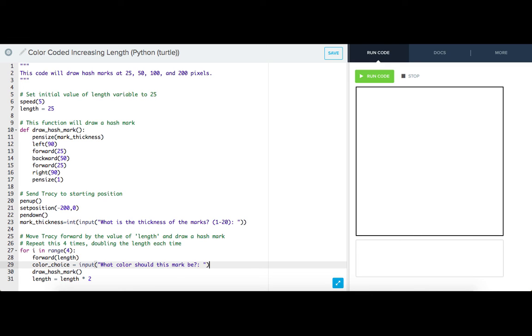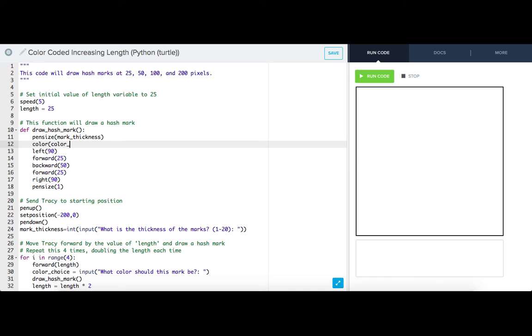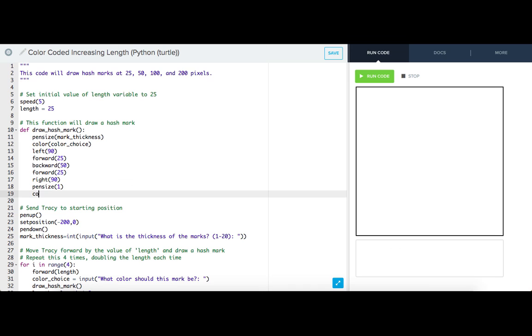Now I want to change Tracy's color before she draws the mark. So I'm going to go to my function and write in color, color_choice, and I want to change the color back to black before she draws the line again. Let's see if this works.